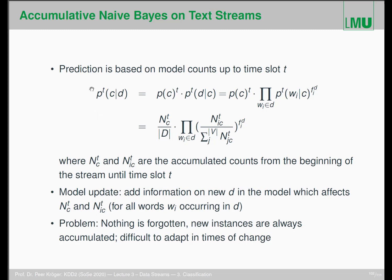Now, how can we adapt the model to a stream? The prediction is based on a model that counts up to time slot t — we incorporate time slot t into the model by accumulating all counts from the beginning of the stream until time slot t. The model update is straightforward: when a new document arrives, we add its information to the model, which affects those accumulated counts. For all words occurring in the new document, we update the corresponding counts. The only problem is that everything is accumulated and nothing is forgotten.